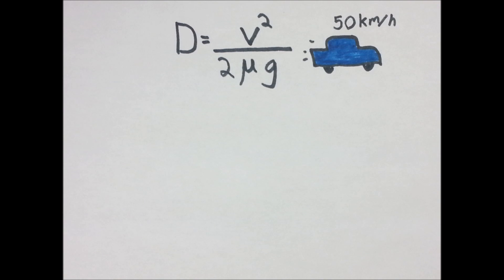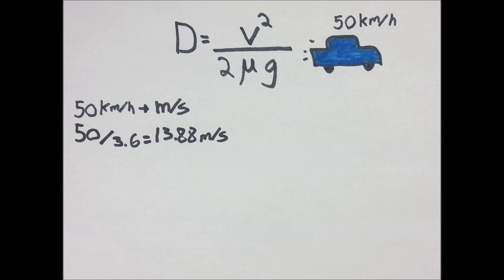Let's figure out how far a car will slide after it slams on the brakes at 50 kilometers per hour. Let's input what we know, and remember that velocity is meters per second, so we have to change it from kilometers per hour, which can be easily done by dividing it by 3.6.